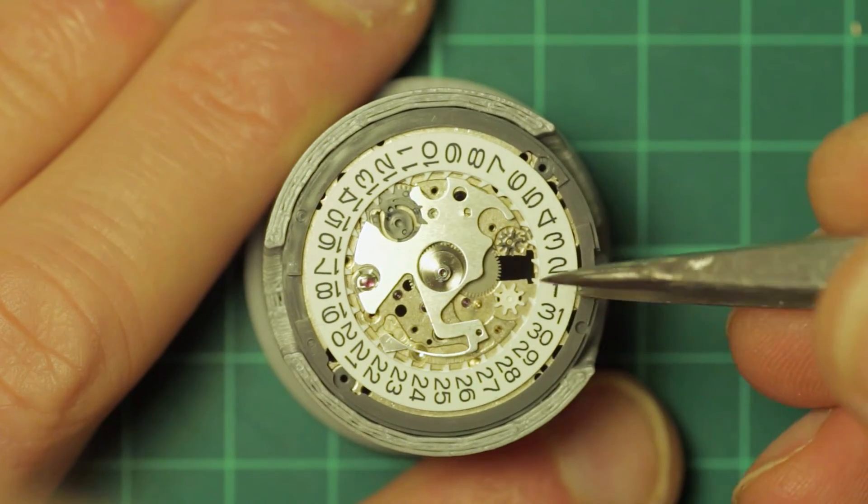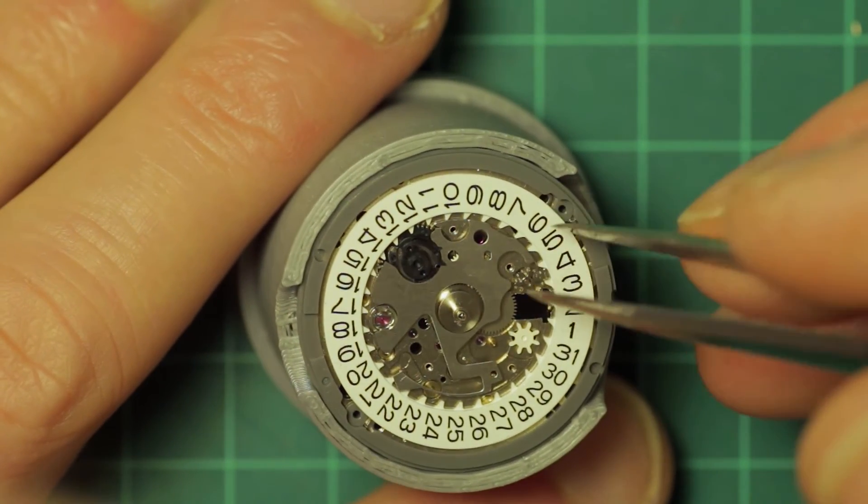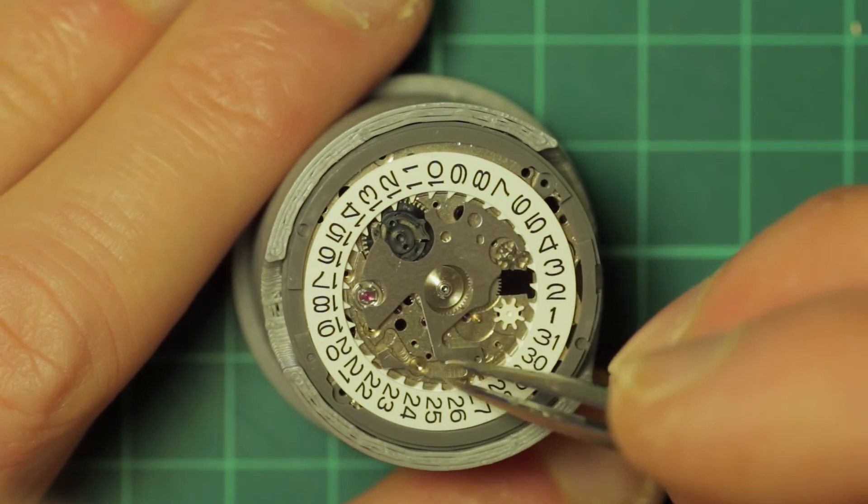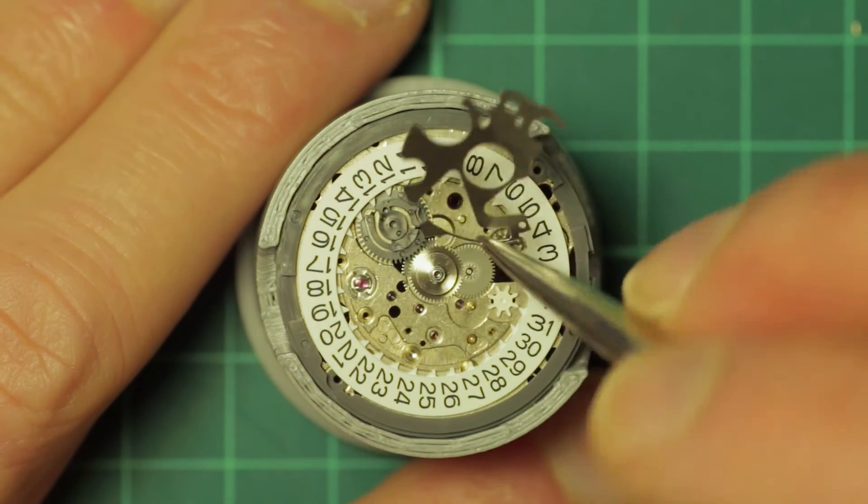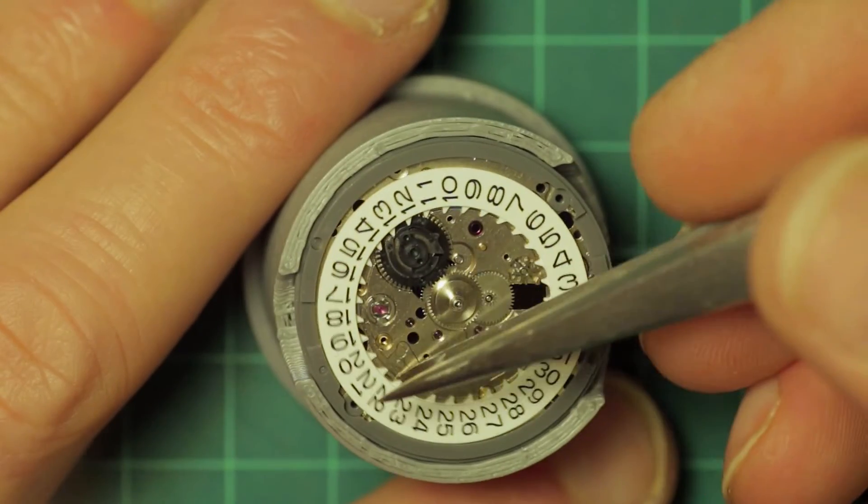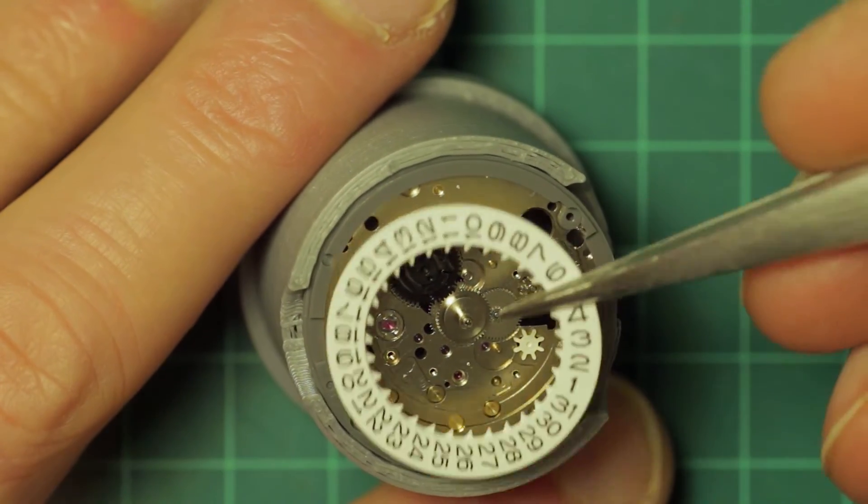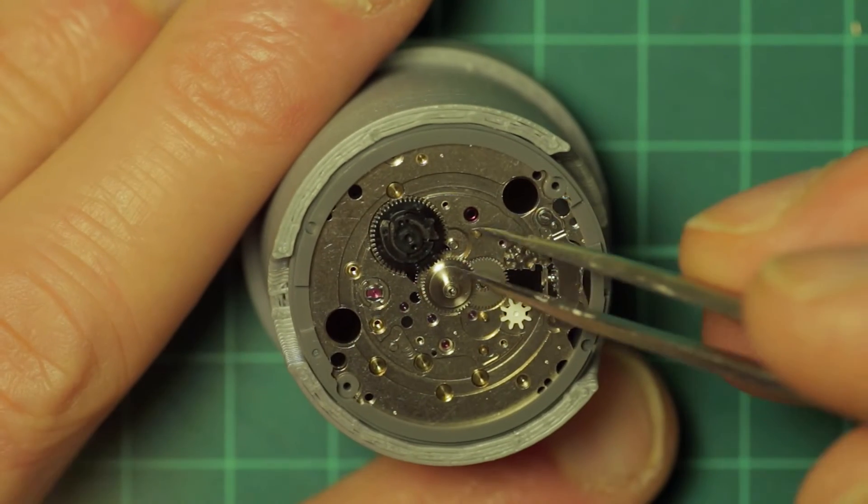The day disc jumper if it had one fitted. Underneath this is the calendar wheel jumper which also forms the shape of a plate. The calendar ring is lifted away.